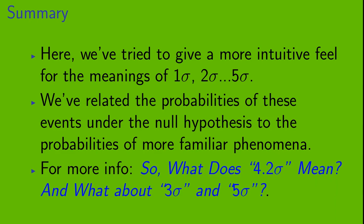Okay, so let's briefly summarize. Here we've tried to give a more intuitive feel for the meanings of 1 sigma, 2 sigma, etc., up to 5 sigma. We've related the probabilities of these events under the null hypothesis to the probabilities of more familiar phenomena. If you're interested in looking at this further, you might want to check out the video, So, what does 4.2 sigma mean? And, what about 3 sigma and 5 sigma?